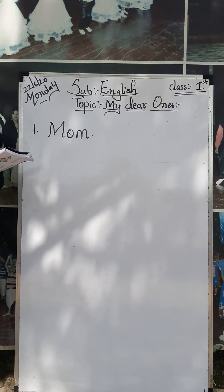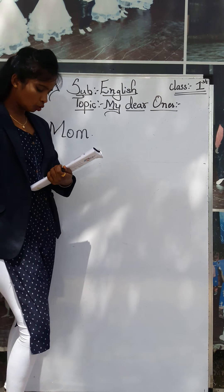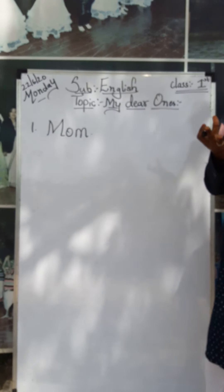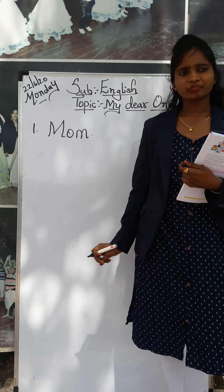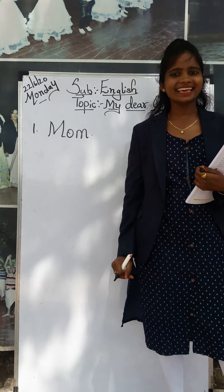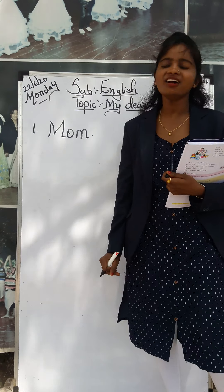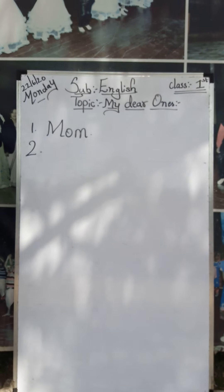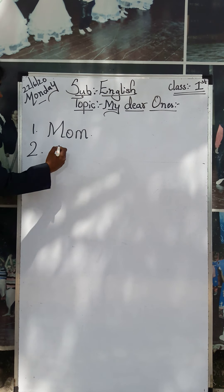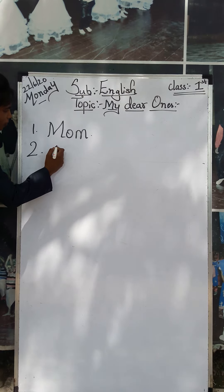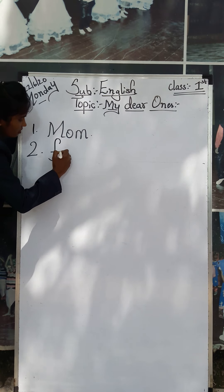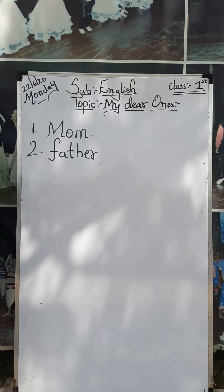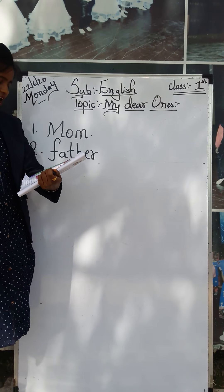Very good. And the second question is who buys you toys? Who buys you playing things? Father buys you, right? Very good, second answer is dad. You can write father — F-A-T-H-E-R. Who buys you toys? Father.